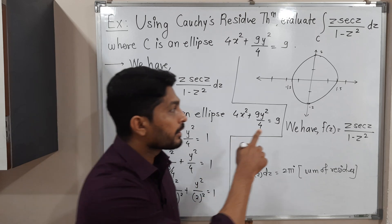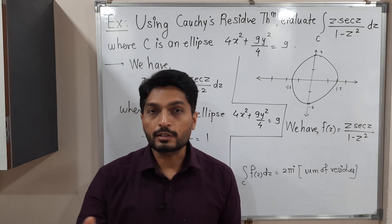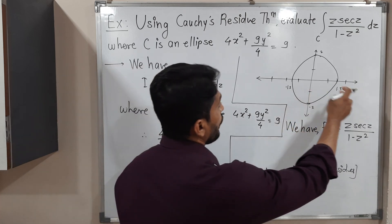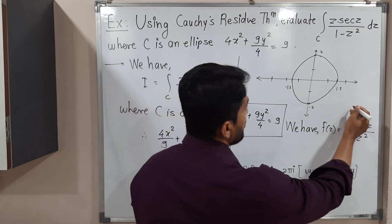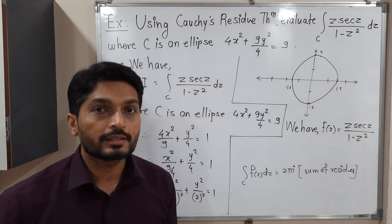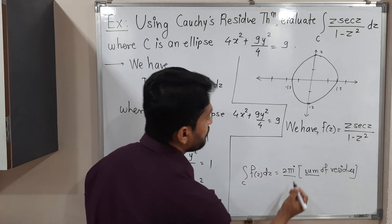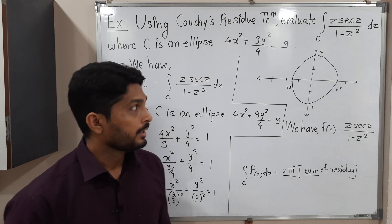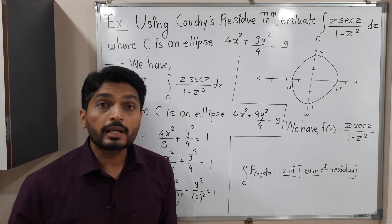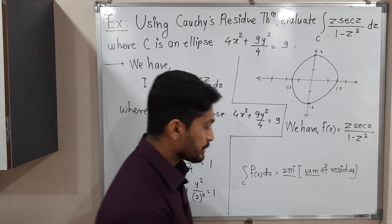What we do: we find the singular points of the given function — points where the function is not analytic, generally where the denominator is 0. We check whether those points lie inside or outside the curve. If a point lies outside the curve, there is no need to find its residue. But if a point lies inside the curve, we must find its residue. Then we take the sum of all residues and multiply by 2πi to get the value of the integration.